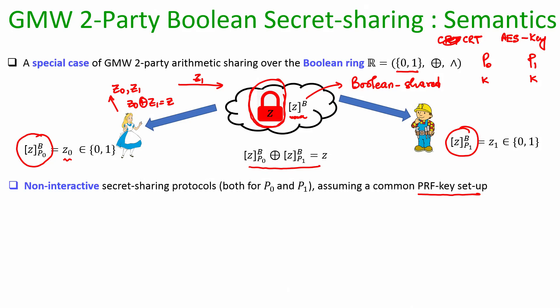Assuming the AES key setup, we can run the counter mode of operation for AES and make this secret sharing protocol non-interactive — namely, the communication of Z₁ from Alice to Bob can be eliminated. Z₁ is a share known to both Alice and Bob and is randomly chosen independent of the value of Z, since Z₀ and Z₁ are random shares such that their XOR is Z.